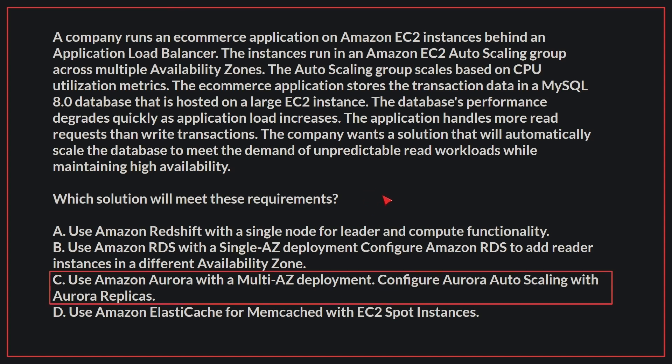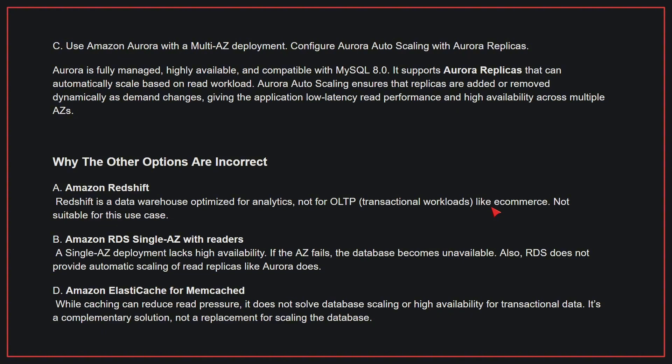The correct answer is C: Use Amazon Aurora with a multi-AZ deployment and configure Aurora auto-scaling with Aurora replicas. Aurora is fully managed, highly available, and compatible with MySQL 8.0. It supports Aurora replicas that can automatically scale based on read workload. Aurora auto-scaling ensures that replicas are added or removed dynamically as demand changes, giving the application low latency read performance and high availability across multiple AZs.